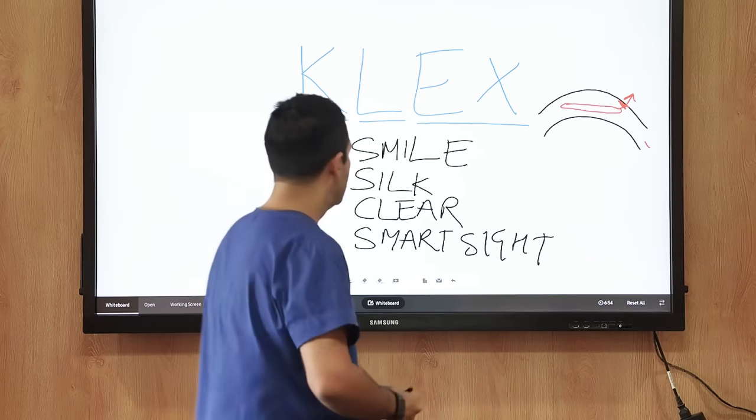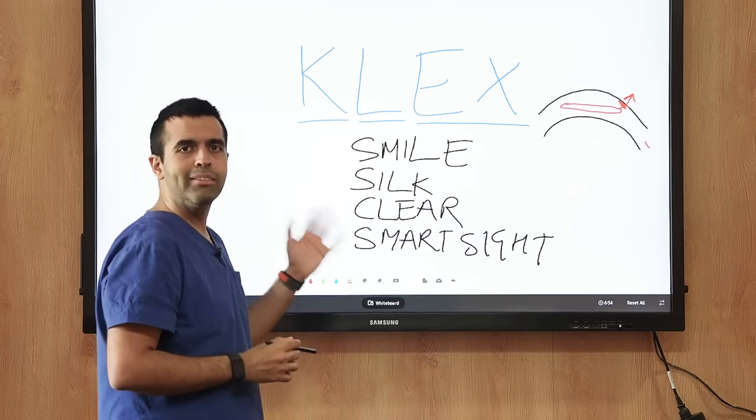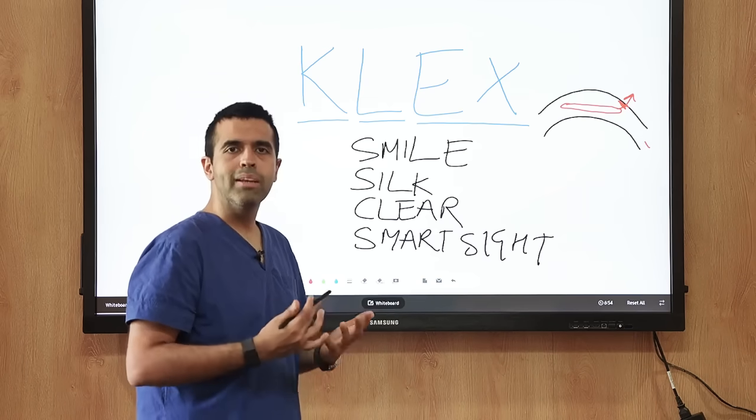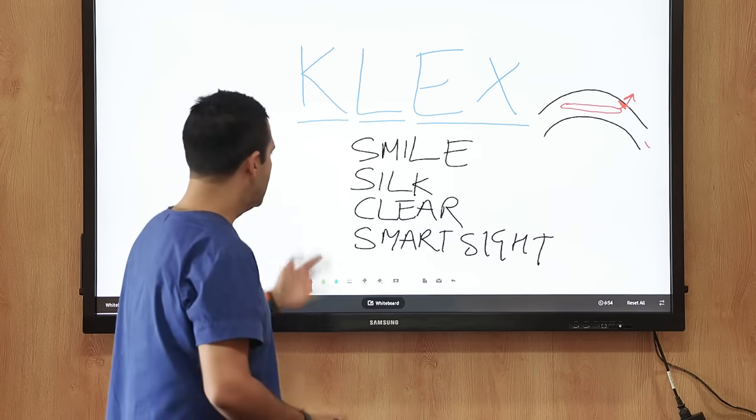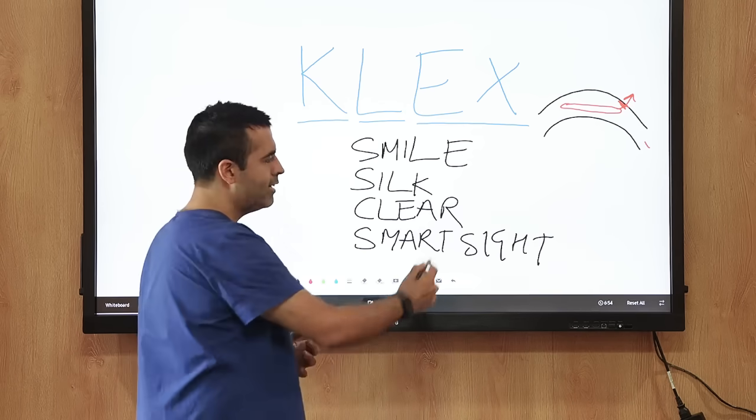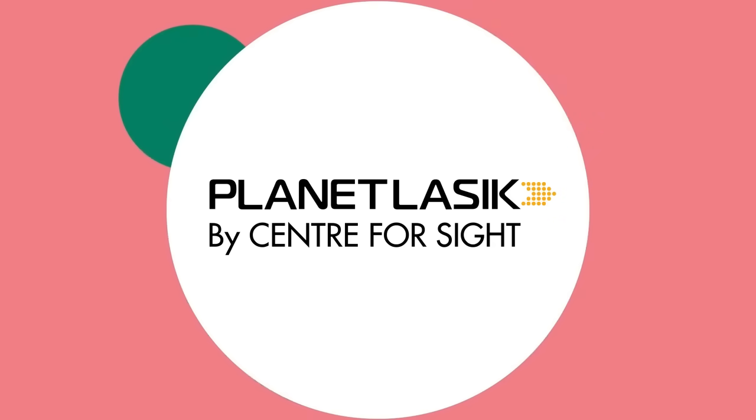So firstly, SMILE is by a German company Zeiss, SILK is by an American company Johnson and Johnson, CLEAR is by a Swiss company Ziemer, and SMARTSIGHT is by Schwind.